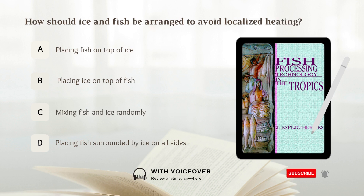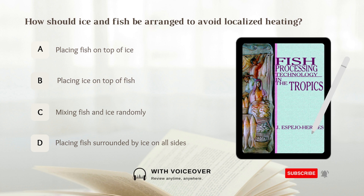How should ice and fish be arranged to avoid localized heating? A. Placing fish on top of ice. B. Placing ice on top of fish. C. Mixing fish and ice randomly. D. Placing fish surrounded by ice on all sides. Answer: D. Placing fish surrounded by ice on all sides.